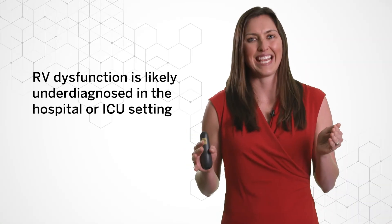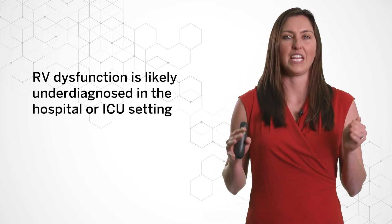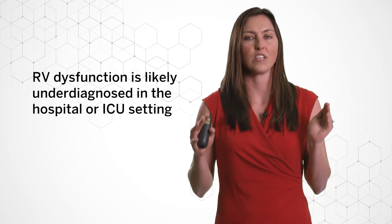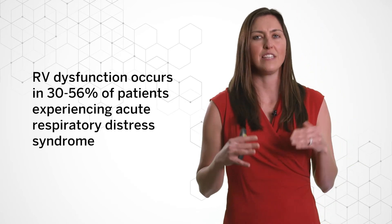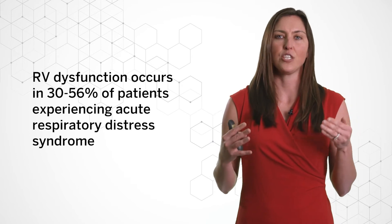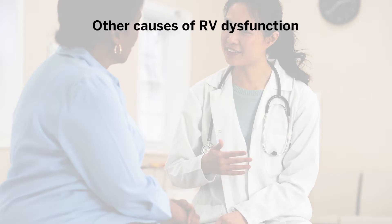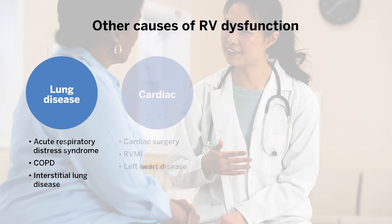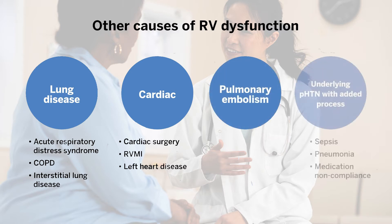Right ventricular dysfunction is likely underdiagnosed in the hospital or intensive care setting. For example, right ventricular dysfunction occurs in 30 to 56 percent of patients experiencing acute respiratory distress syndrome. Other causes include cardiac etiologies such as post-valvular surgery, pulmonary embolism, or situations where underlying pulmonary hypertension is compounded by another condition such as sepsis.